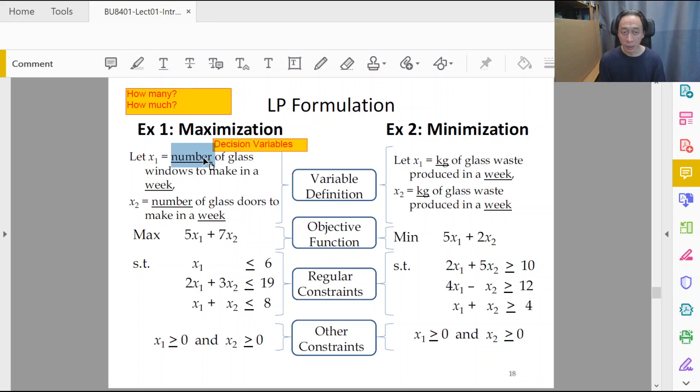It's the unit. Here, when Excel finds a solution that says five, we come back to this definition and we know that the five means actually five glass windows, not five thousand, not five crates, not five lorry trucks of glass windows.